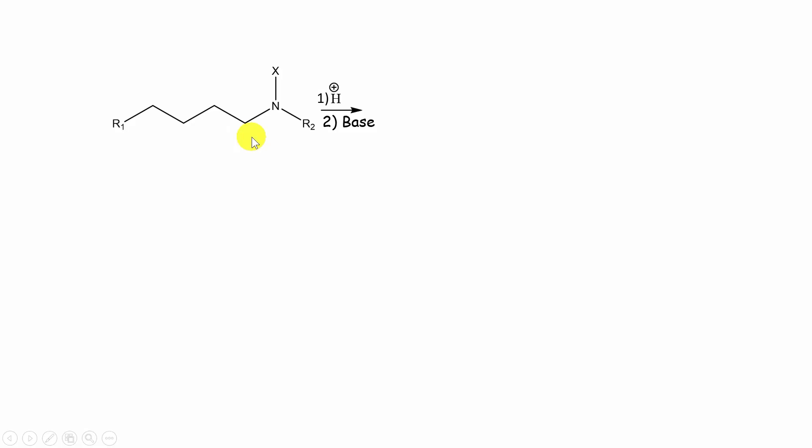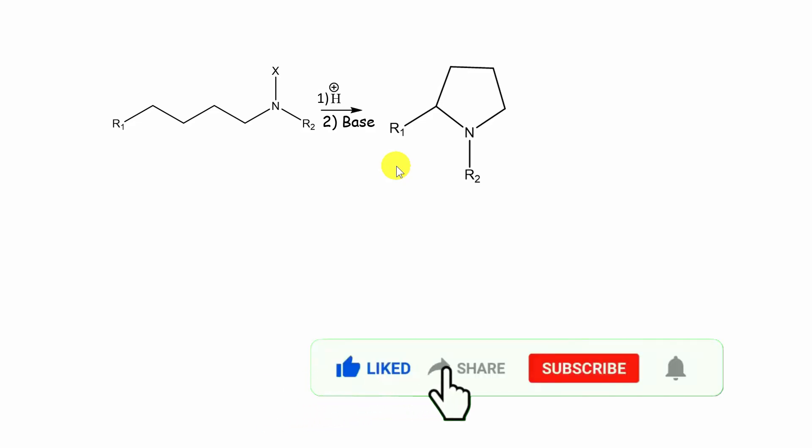For example, when this N-halogenated amine is heated with acid followed by heating with base, a pyrrolidine derivative is formed. In some cases, N-halo-alkynes heated with acid followed by treating with base form pyrrolidine derivatives.